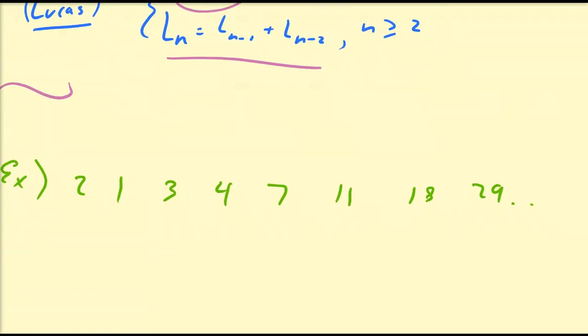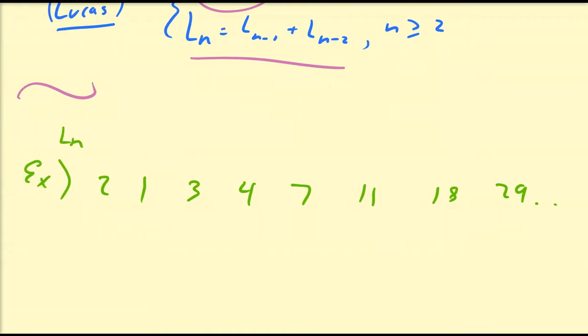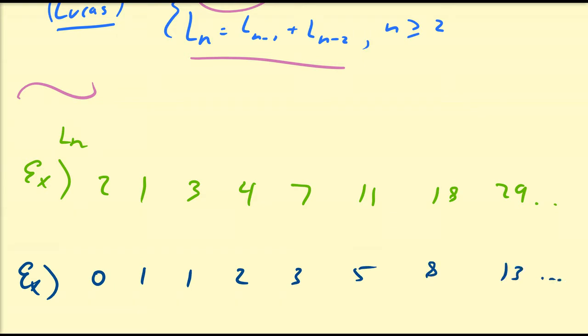Let's list the Fibonacci numbers to compare them. So we have 0, 1, 1, then 1 plus 1 is 2, 3, 5, 8, 13, and so on.